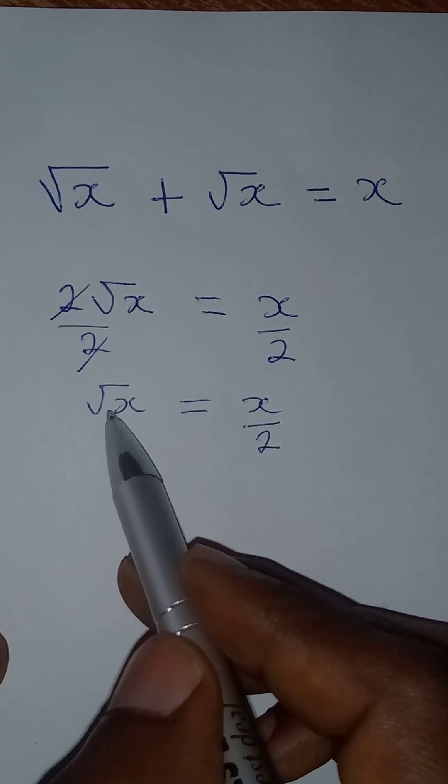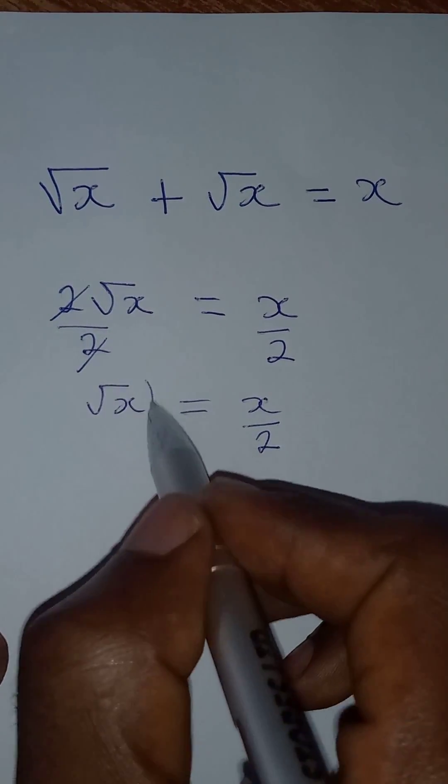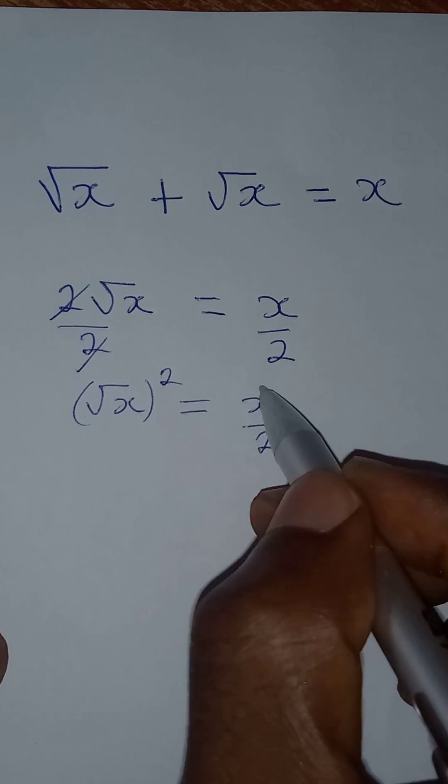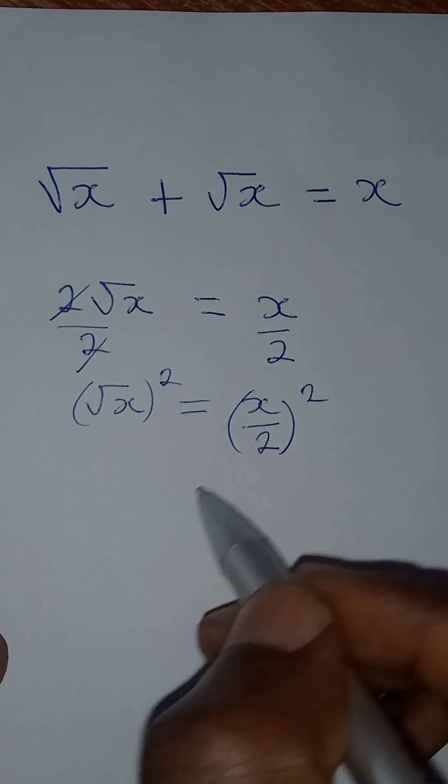And then if I have to remove this square root from here, then I will square both sides. And I will square this side too.